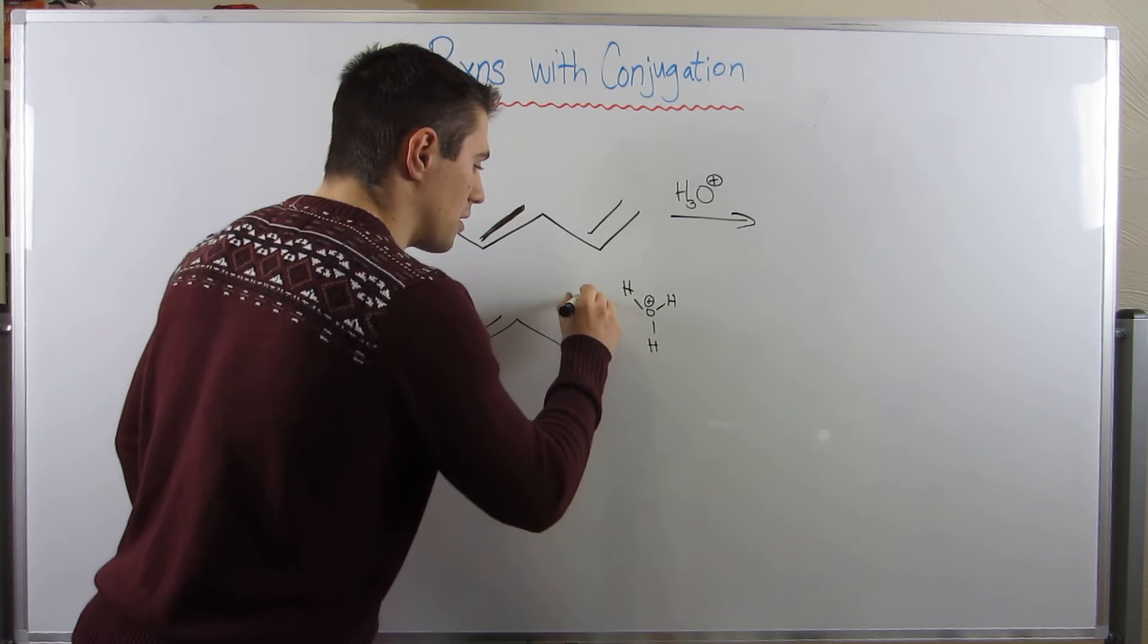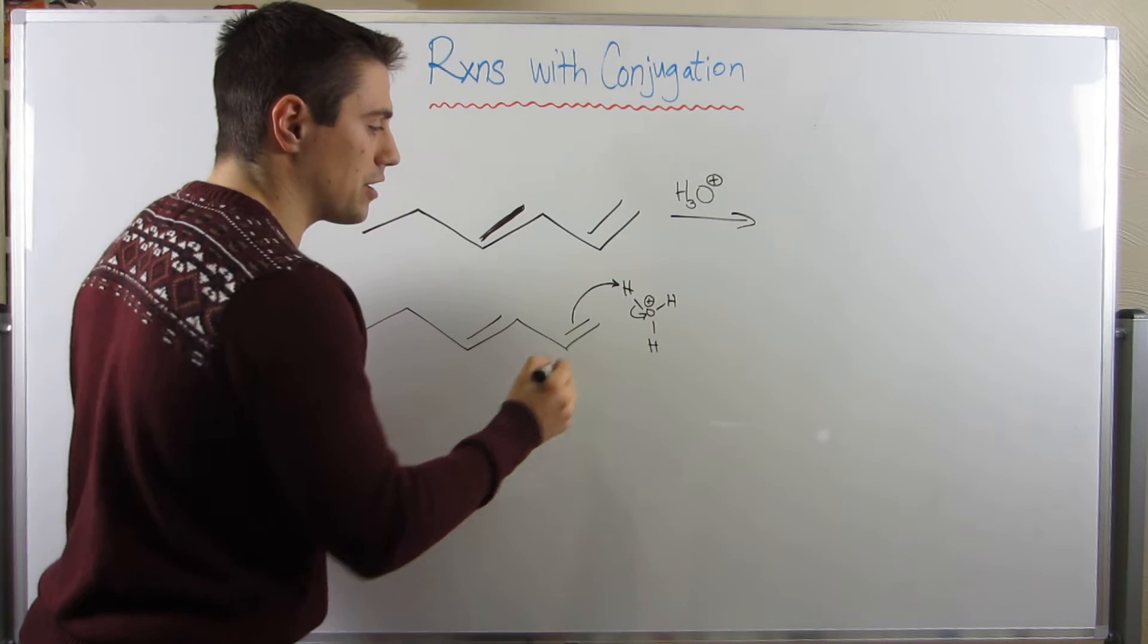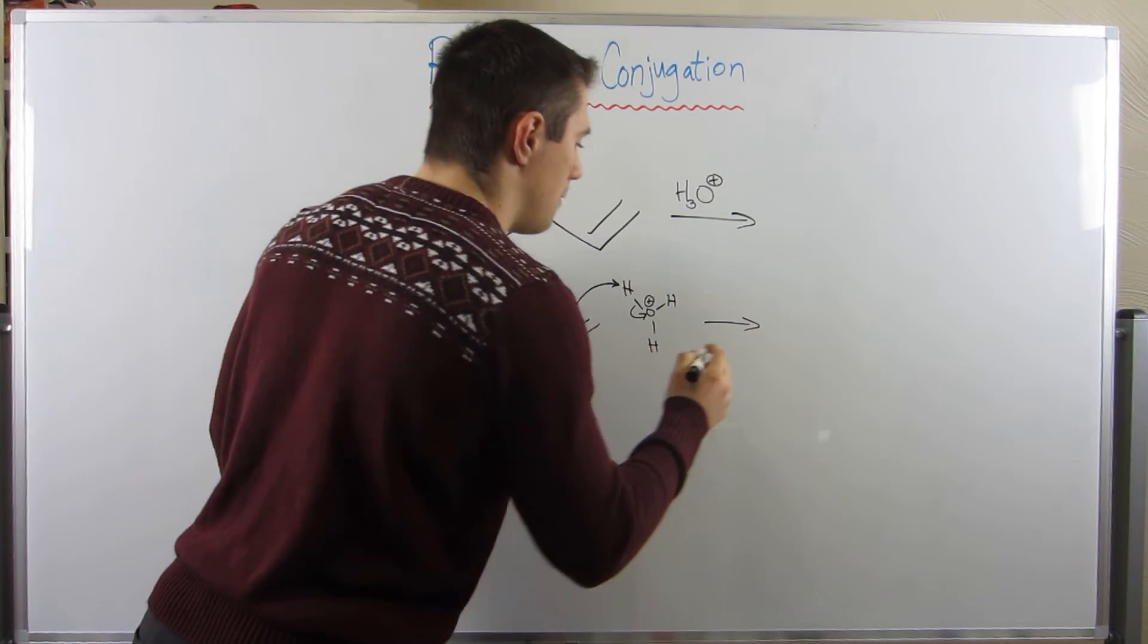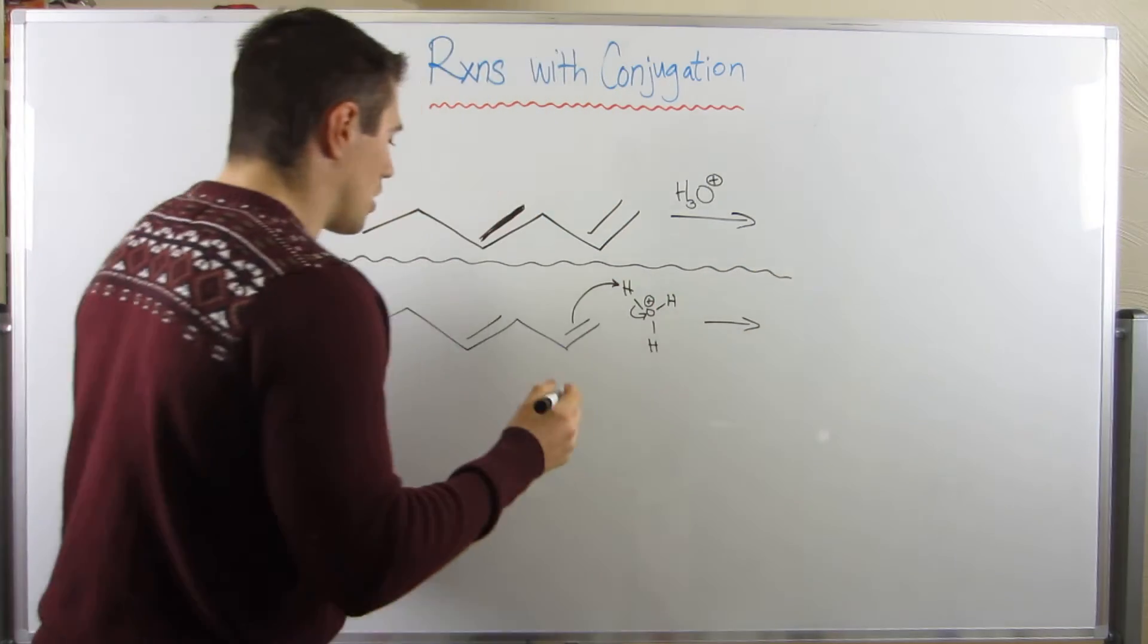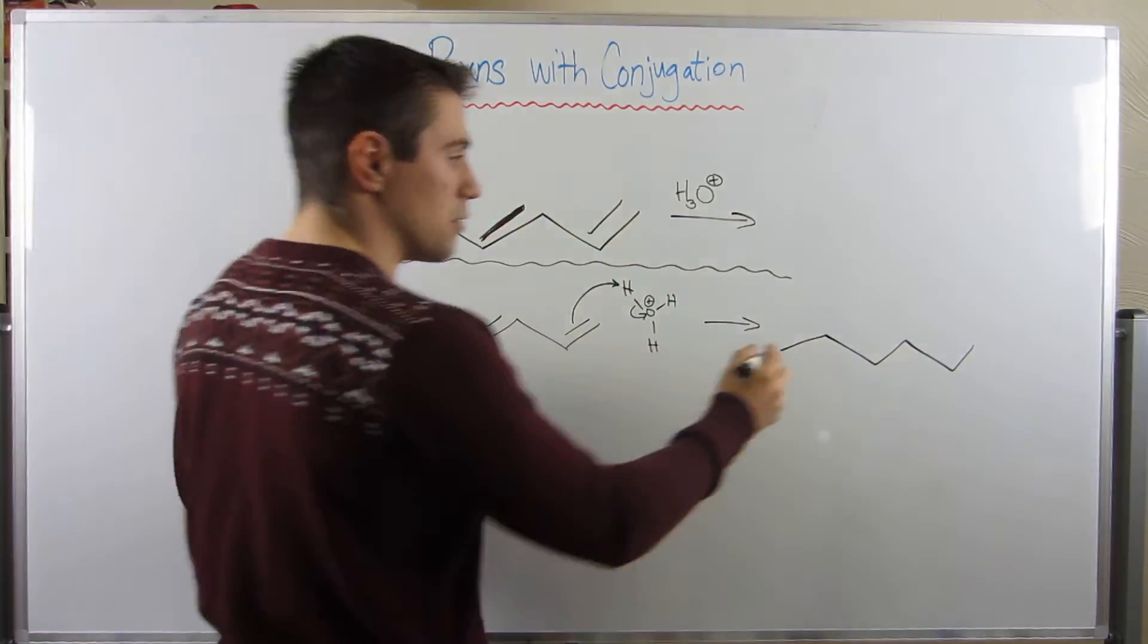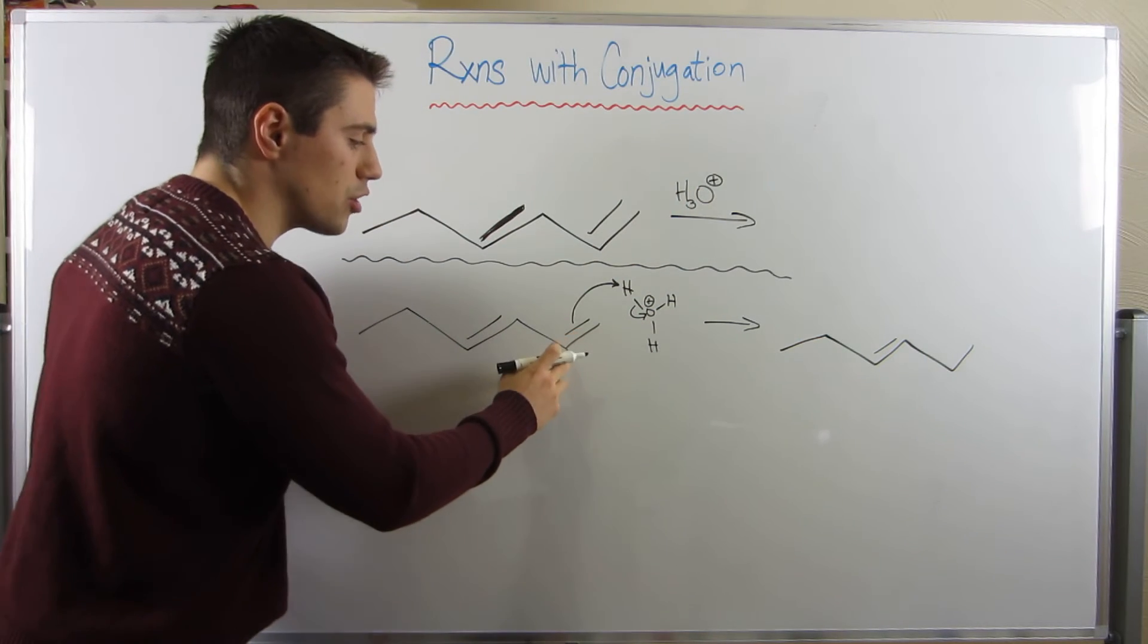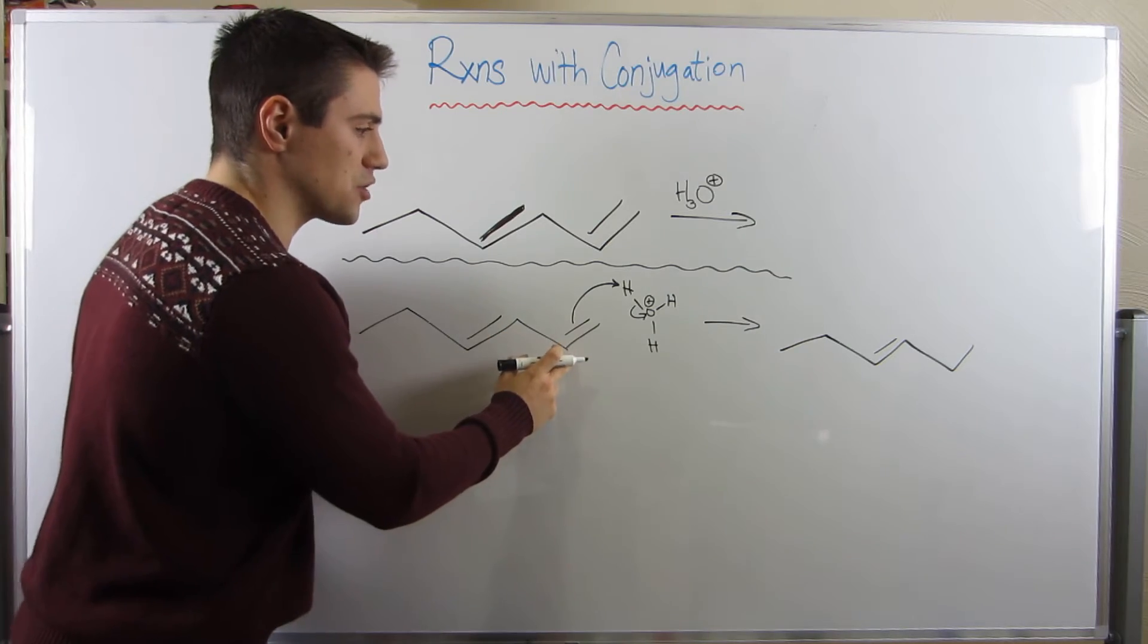So, let's figure out mechanistically what we would do first. There's hydronium. Now, which double bond do we protonate? And I'm going to tell you this double bond. And here's my reasoning: we're going to grab H+, and this electron pair goes on to the oxygen.